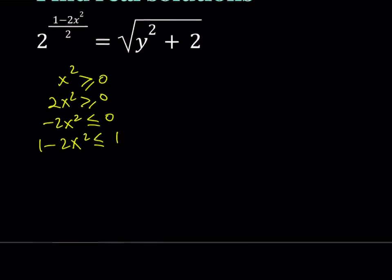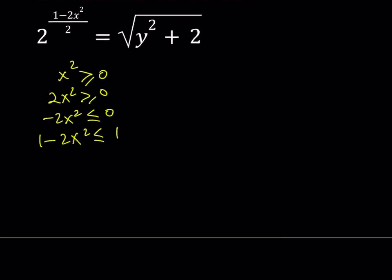You could also verify this by thinking about if I subtract a non-negative quantity from 1, the result is always less than or equal to 1. Because if x is 0, it's 1, otherwise it's less than 1. So, we now know that 1 minus 2x squared is less than or equal to 1.